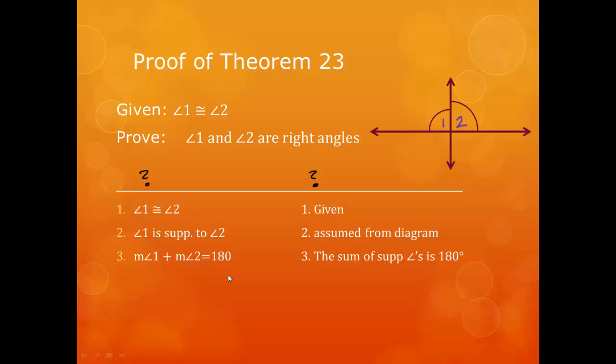Then we can say that the measure of angle 1 plus the measure of angle 2 equals 180, because the sum of supplementary angles is 180. And then by substitution, we can say that the measure of angle 1 plus the measure of angle 1 equals 180.